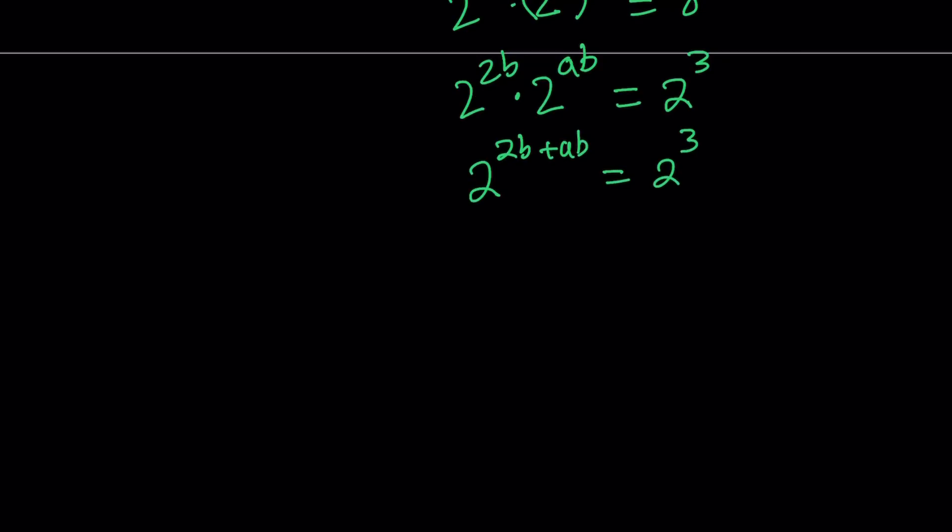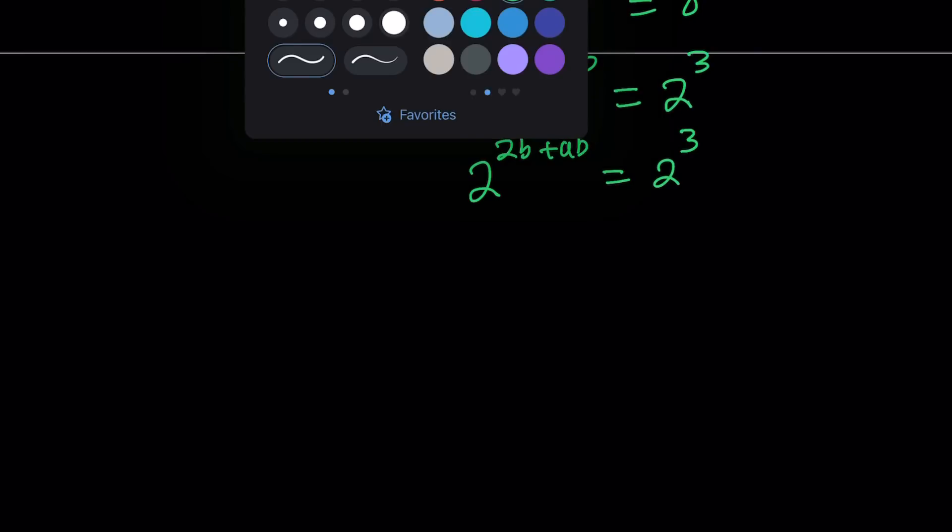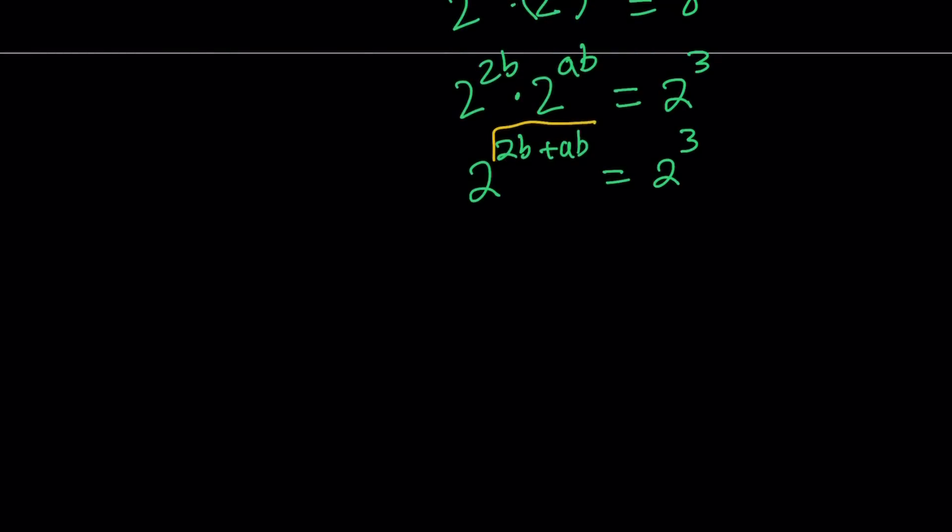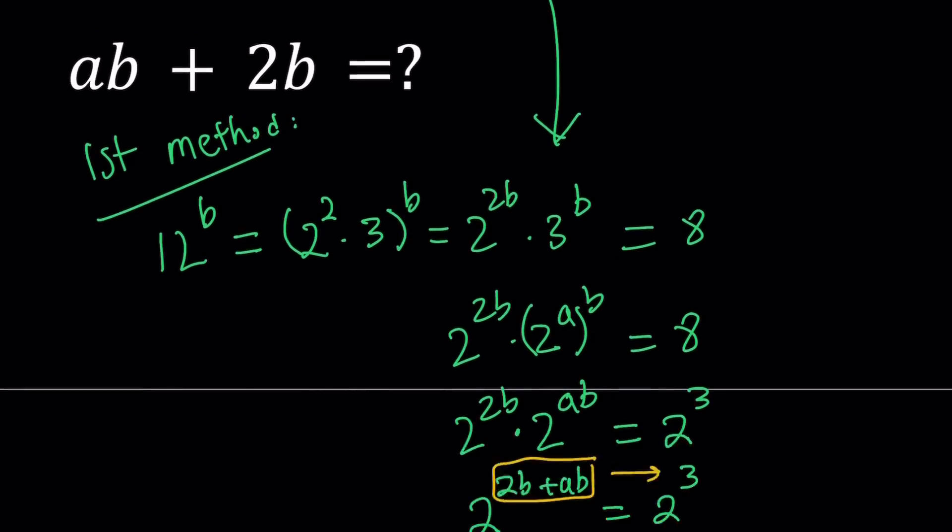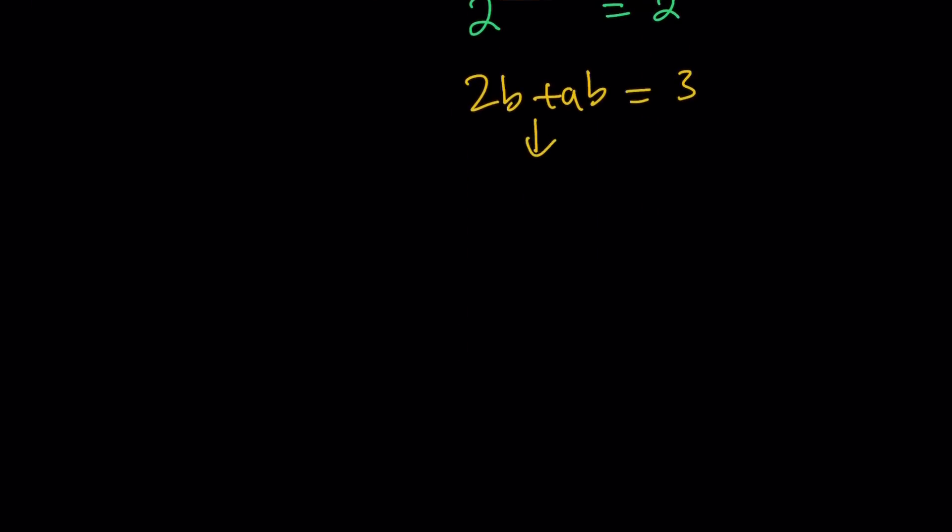Now the bases are equal, the numbers are equal, so the exponents are also equal. Which means this equals 3. So let's go ahead and write it down. 2b plus ab is equal to 3. What are we looking for? We're looking for ab plus 2b but this is equal to that. ab plus 2b is equal to 3 and the answer is 3.